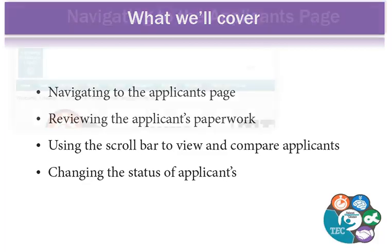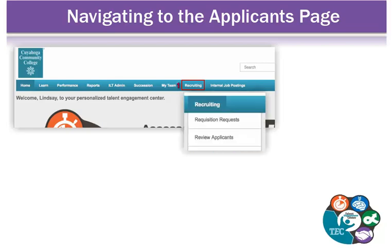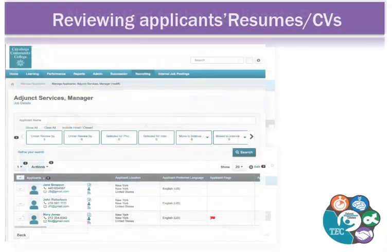Let's dive in. To navigate to the Review Applicants page, on the Tech Welcome page, hover over the Recruiting tab. The drop-down menu will appear. Click the Review Applicants tab and the page opens. Locate the job position you want to manage. Click on the Number of Applicants. You are directed to the Applicants page.